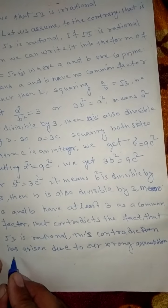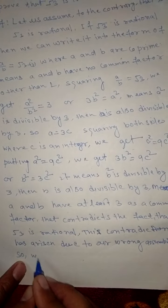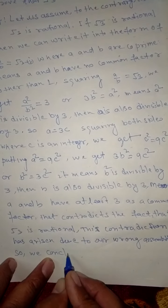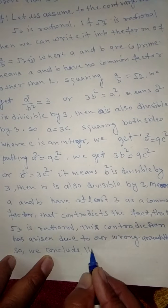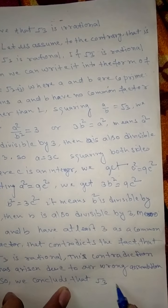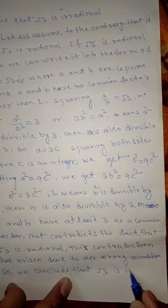So, we conclude that root 3 is irrational.